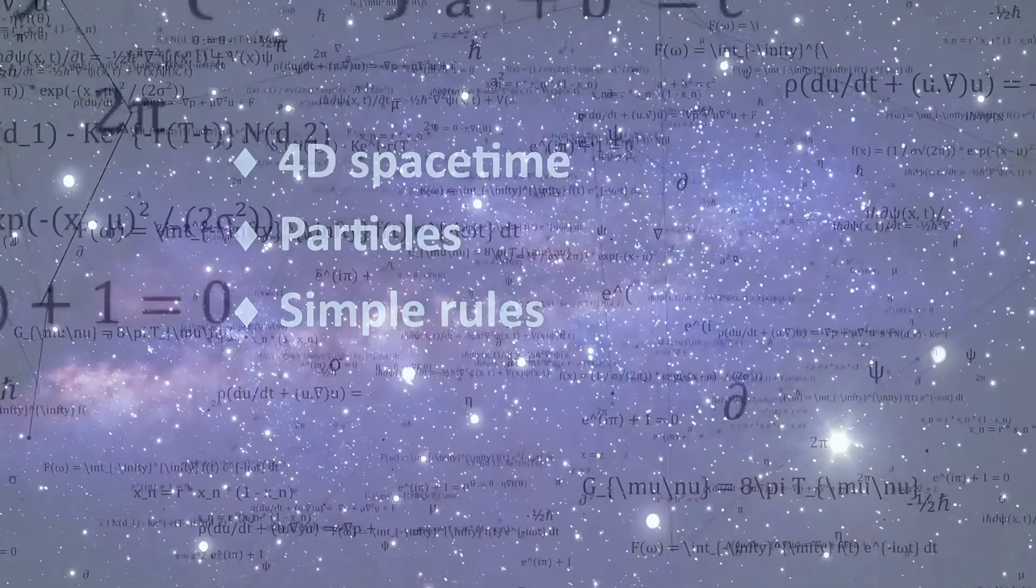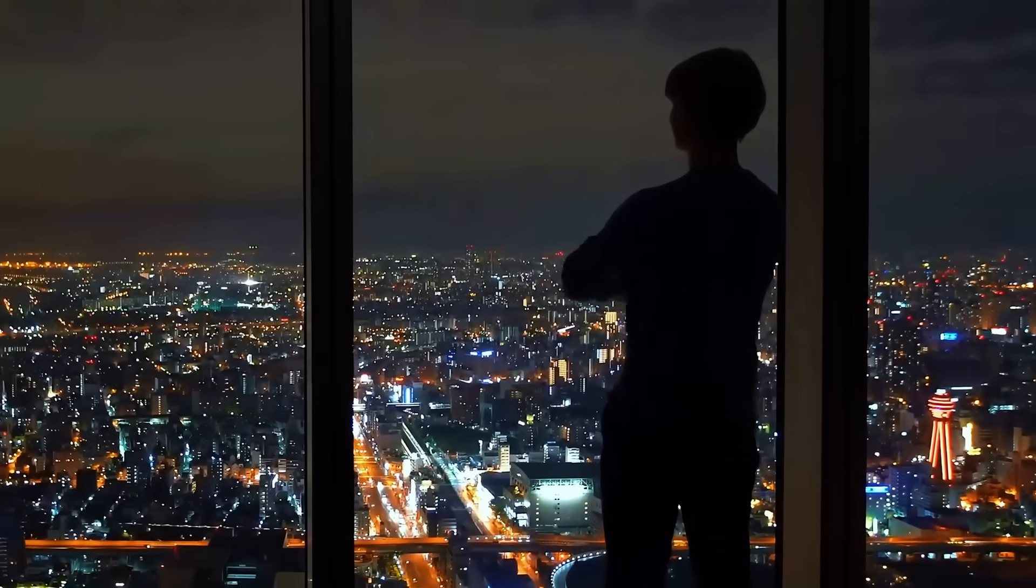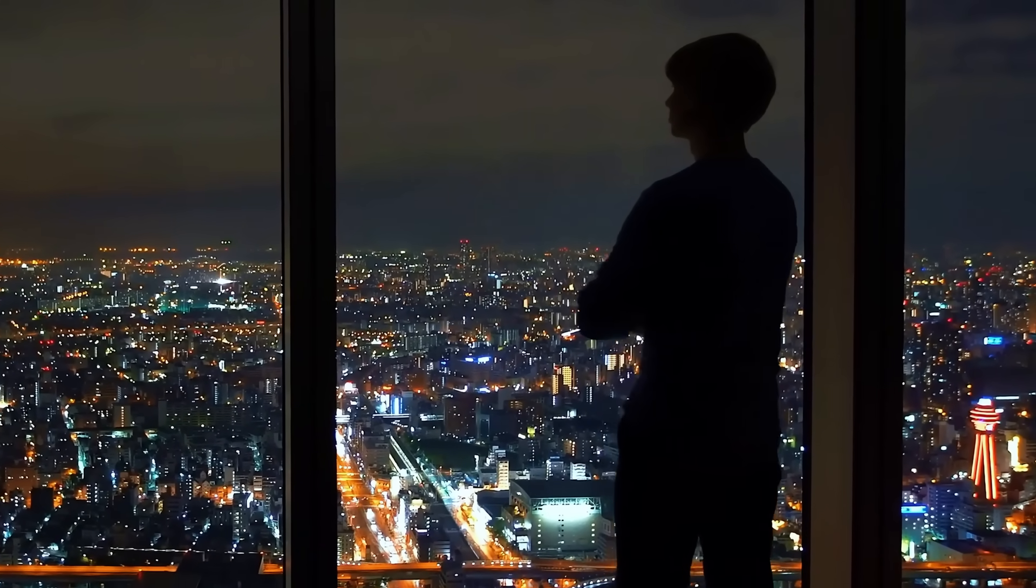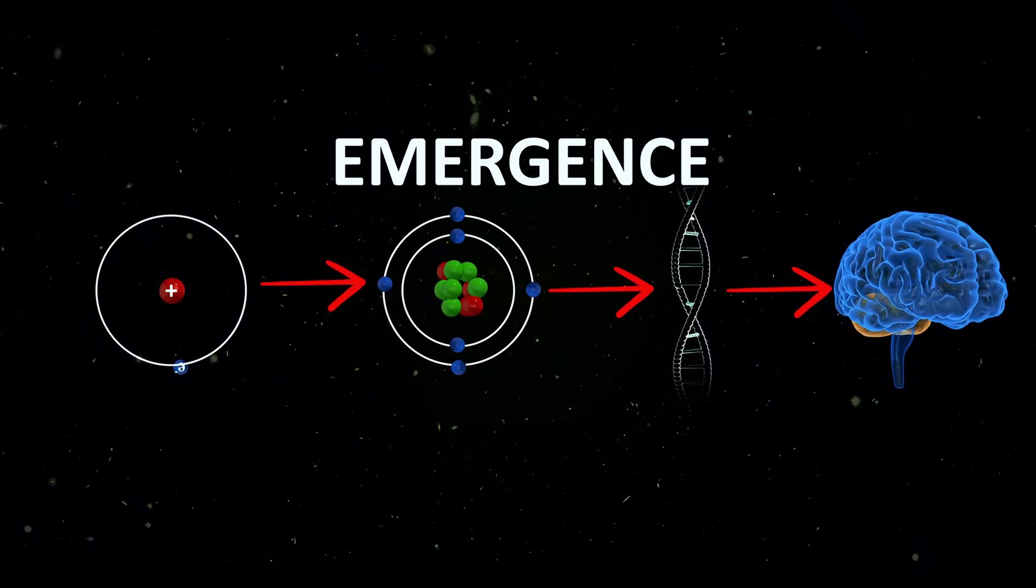From these you can get a whole host of interactions and a shocking amount of complexity, the kind of complexity we see all around us. What are these rules, and what are these interactions that give us everything? That's coming up right now.